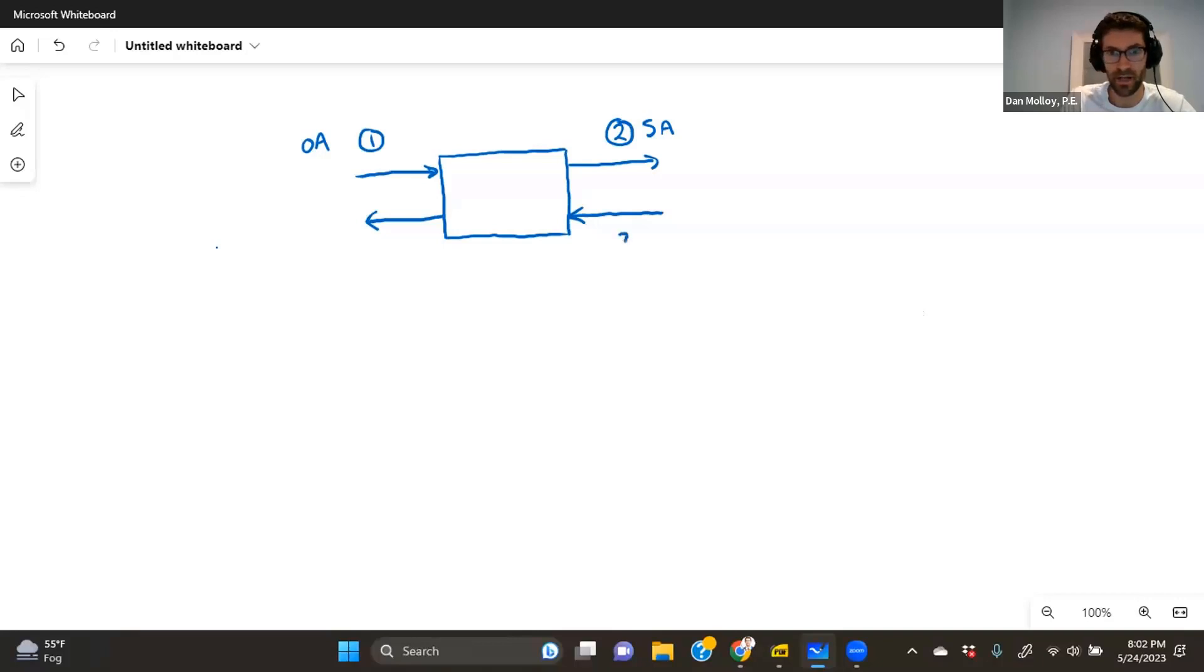And then the air that's being given up, that's leaving the building, will be state three. We'll call that the return air. Sometimes that's the recirculated air. But that's the air that's going to become exhaust air, so we'll use EA for that. And that'll be our state four.